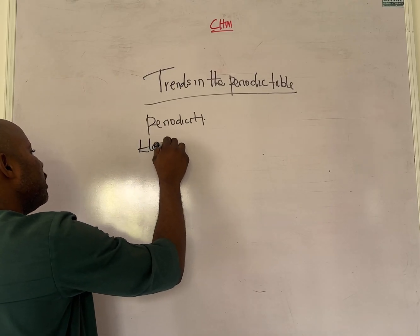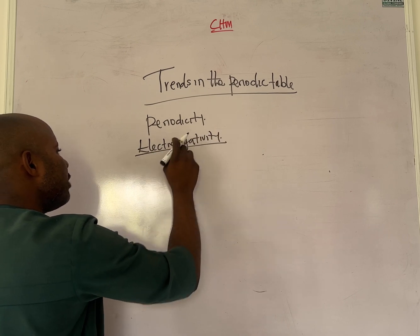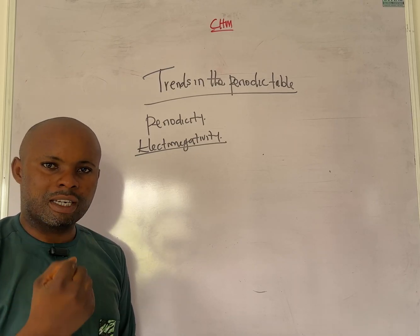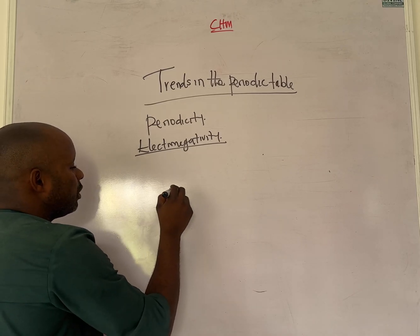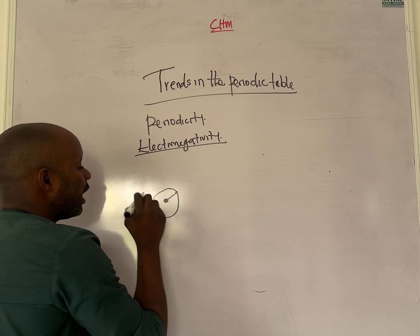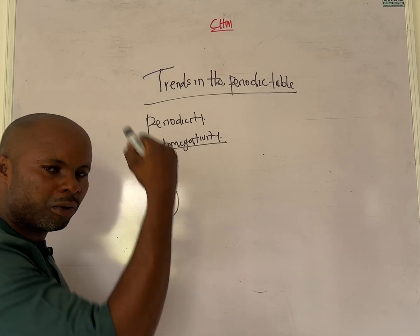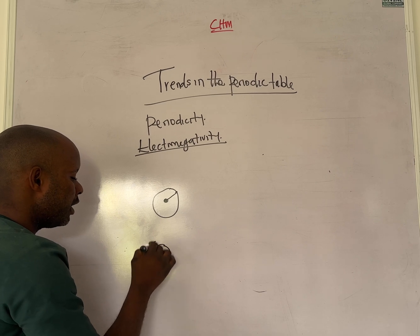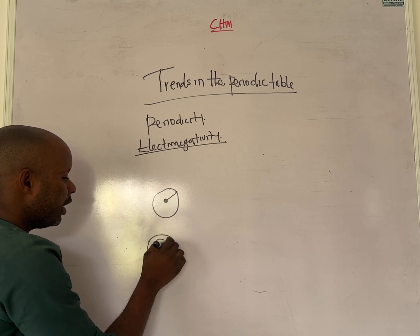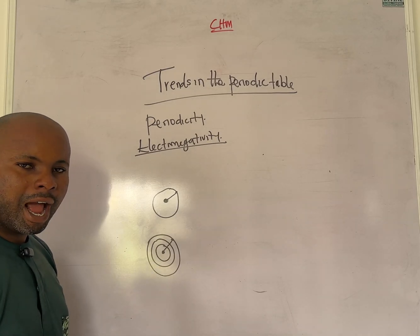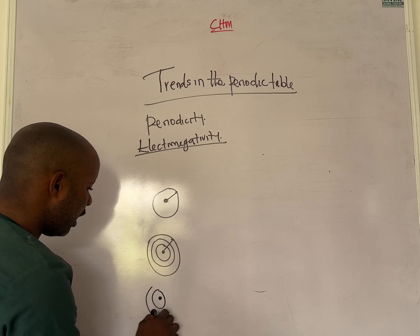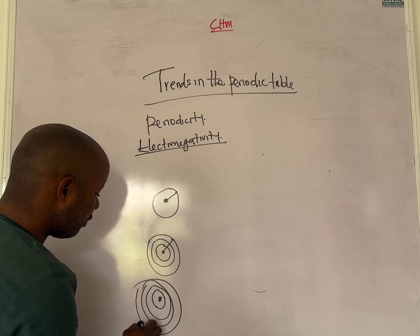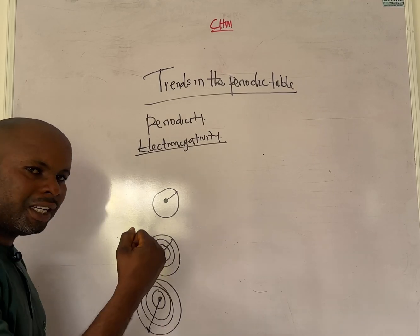The next trend is electronegativity. Electronegativity is defined as the ability of an atom to attract electrons to itself. The closer the electron is to the nucleus, the force of attraction becomes very high. As we consider different periods, the distance between the nucleus and the valence electrons changes.